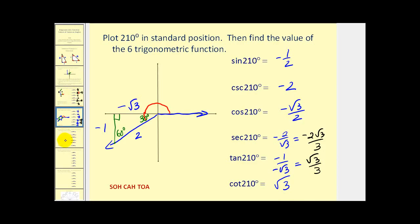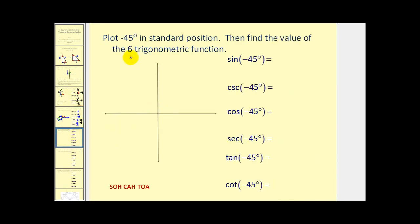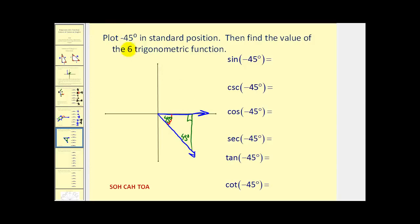Now we want to plot negative 45 degrees — that's a clockwise rotation of 45 degrees from the initial side. We sketch the terminal side, form the reference triangle, and note both angles in the triangle are 45 degrees, so the sides relate as one, one, square root two. We're in the fourth quadrant, so the x-coordinate is positive but the y-coordinate is negative one.